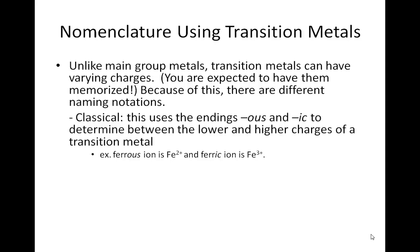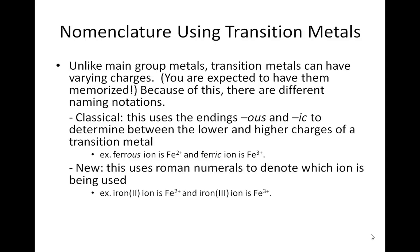For example, the ferrous ion is Fe2+, and the ferric ion is Fe3+. And then there's the new naming system. This uses Roman numerals to denote which ion is being used. So iron 2 ion is Fe2+, and iron 3 ion is Fe3+.